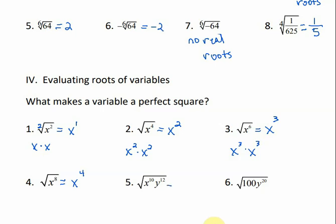For the square root of x to the tenth times y to the twelfth: whatever the root is, that's what we divide by. 10 divided by 2 is 5, and the square root of y to the twelfth is y to the sixth. Now, we only divide exponents — not the big numbers. For the big numbers, we take the actual square root. So for the square root of 100 y to the twentieth: the square root of 100 is 10, and y to the twentieth divided by 2 is y to the tenth.